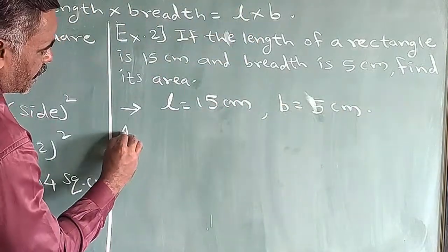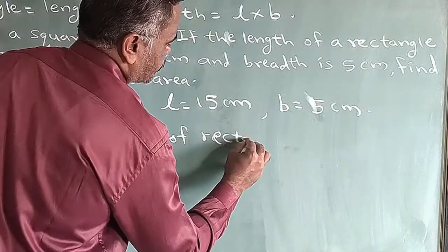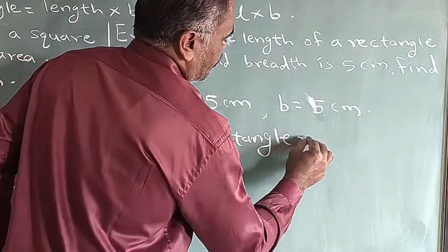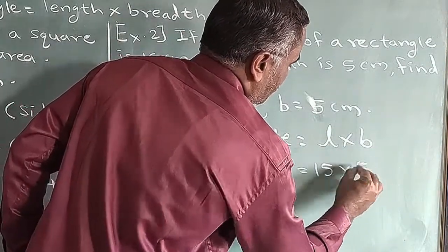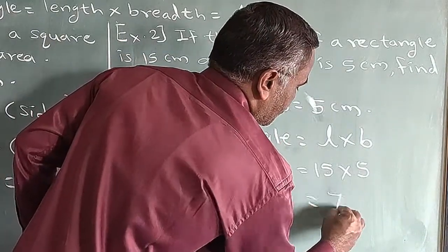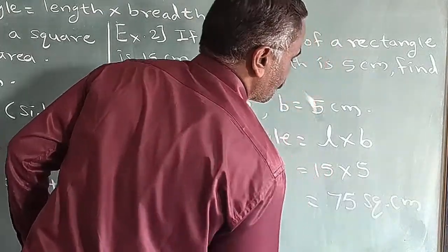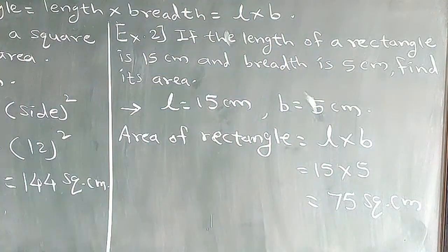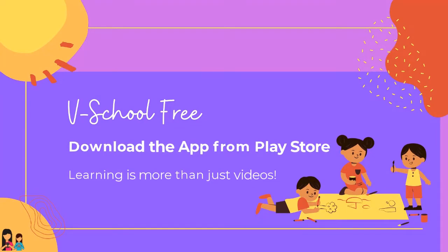And therefore, area of rectangle is equal to length into breadth, which is equal to 15 multiplied by 5. The area of the rectangle is equal to 75 square cm.